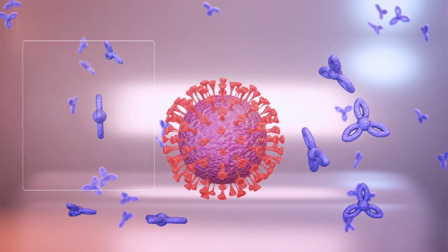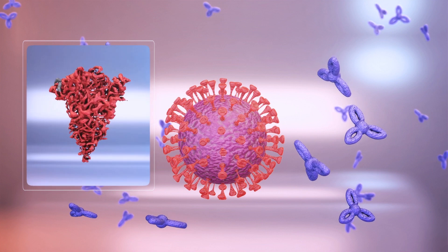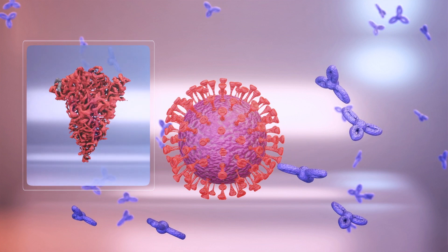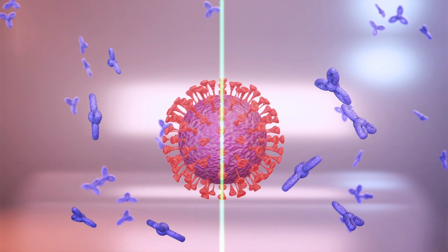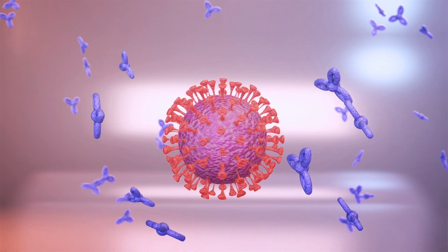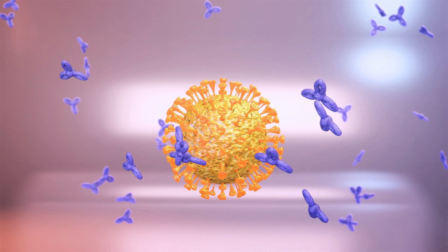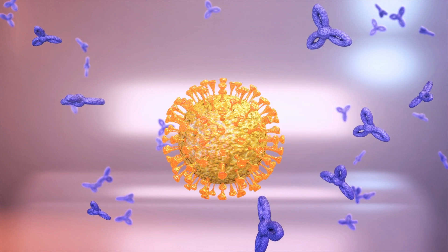The new variant found in Vietnam combines both of these previous mutations with a Y144 deletion on its protein spike that is consistent with the UK variant, according to Vietnam's National Institute of Hygiene and Epidemiology cited by VN Express.